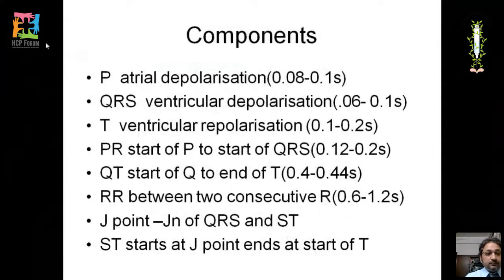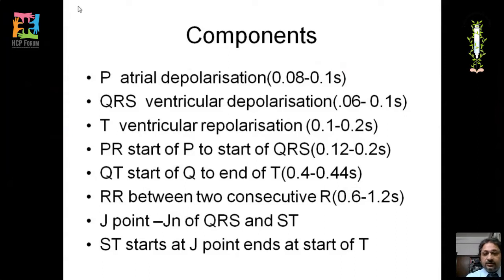The P wave is the atrial depolarization wave with a duration of 0.08 to 0.1 seconds. The QRS complex is due to ventricular depolarization with a duration of 0.06 to 0.1 seconds. The T wave represents ventricular repolarization with a duration of 0.1 to 0.2 seconds.